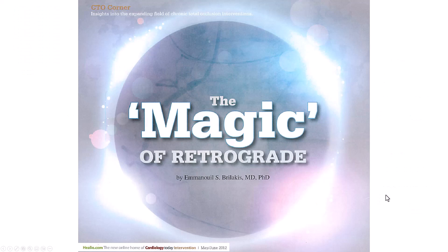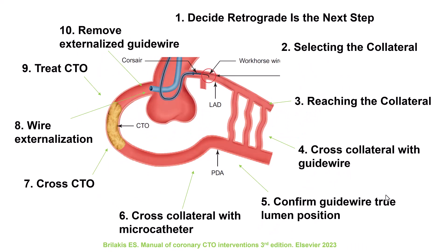There is something magic about the retrograde approach. It can be the decisive technique and allow success in some very complex occlusions, but at the same time it does have an increased risk of complications. That is why performing a systematic approach and following each of the 10 steps in a very organized and methodical way can go a long way in minimizing the risks and optimizing the potential result of the procedure.